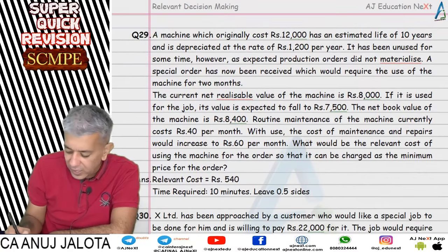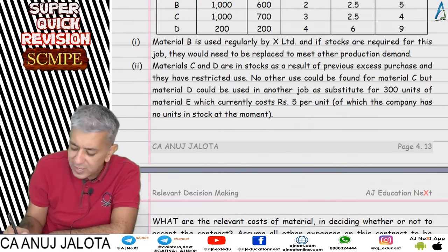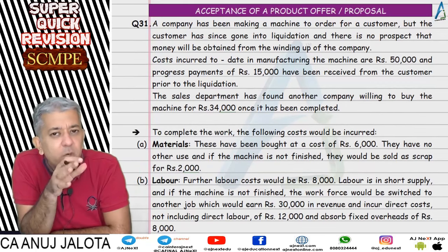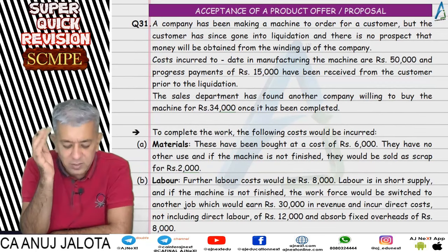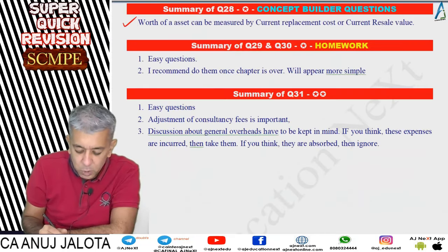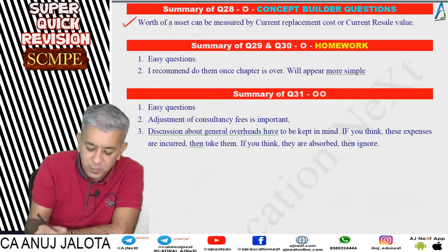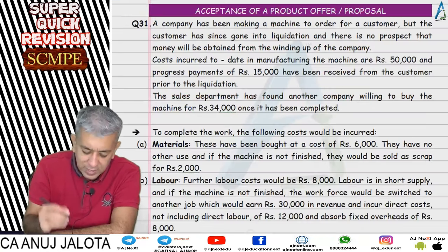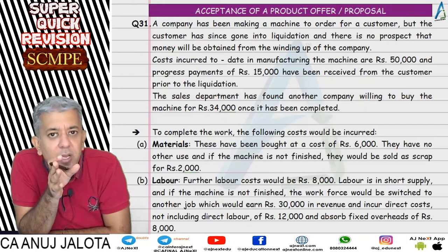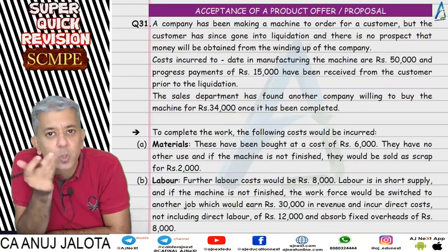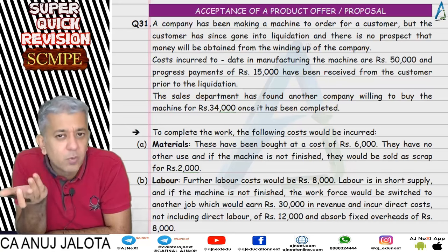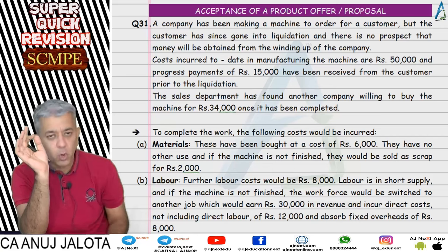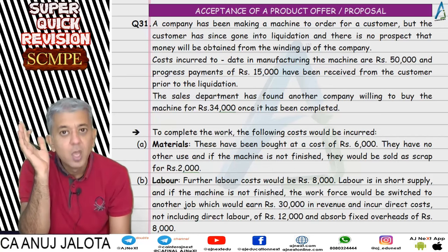Questions 29 and 30 were assigned as homework — easy questions that will feel very simple after completing the chapter. Question 31 was the last question, and it was straightforward except for a few things to remember: if something has already been spent, it is a sunk cost — forget it. If income has already been received, that's past — forget it too. Always think in terms of relevant revenue and relevant cost going forward.